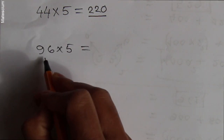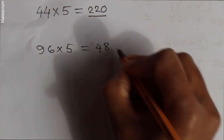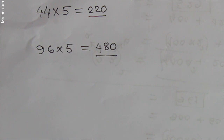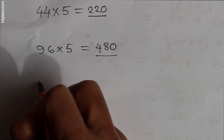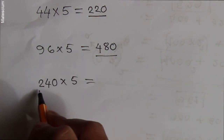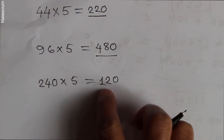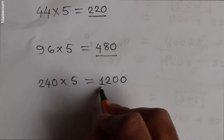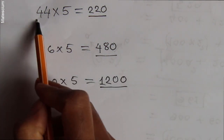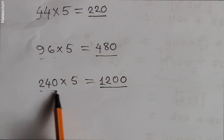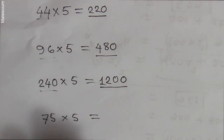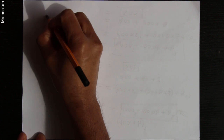If you know the right way, you can multiply any number by 5 or 15 within a few seconds. For example, if I multiply this number by 5, it takes only a few seconds — this multiplication also takes very short time. Are you curious to know how? Well, let me disclose the secret. Let's take a random number.